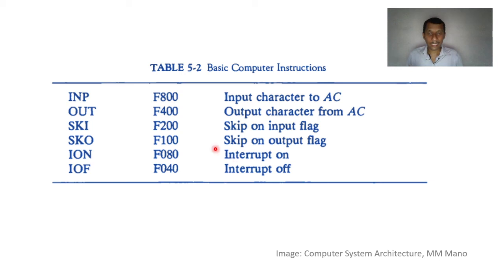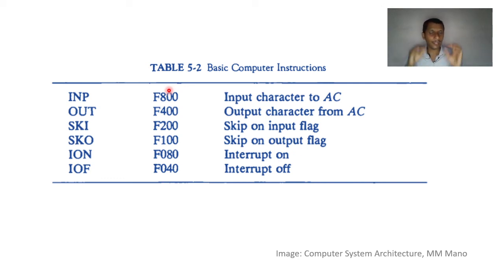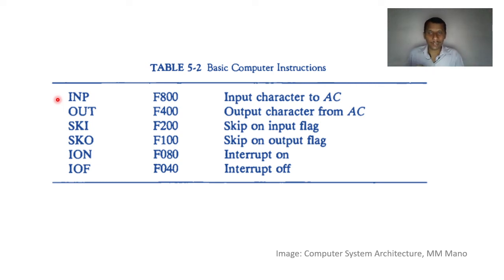For the I/O instruction, the first part is fixed to F — all bits of the opcode are set to one. The operand part indicates which I/O operation it is, using 12 bits: whether it is an input operation, output operation, or interrupt operation. Examples include an input instruction that inputs a character to the accumulator, and an OUT instruction that sends the accumulator content to an output device.